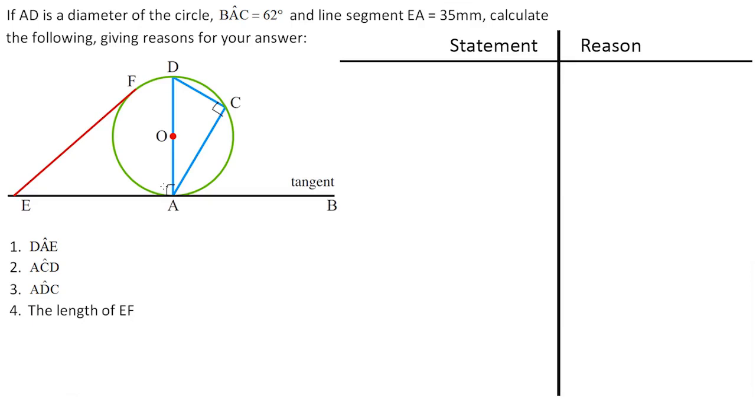Now we read further. BAC is 62. Let's fill BAC. BAC, that is 62 degrees. Immediately, this is your tangent, that is your chord. So in other words, the tan chord theorem states that if this is 62, then can you see that chord subtends angle D. In other words, it means that angle D is also equal to 62. Immediately.